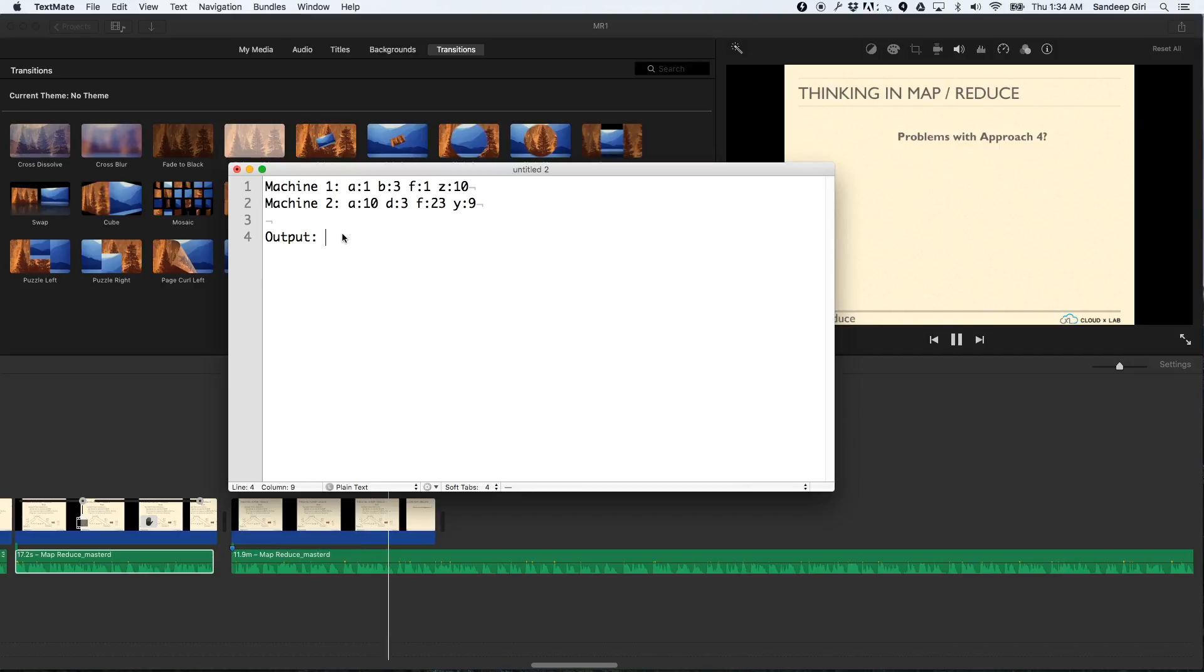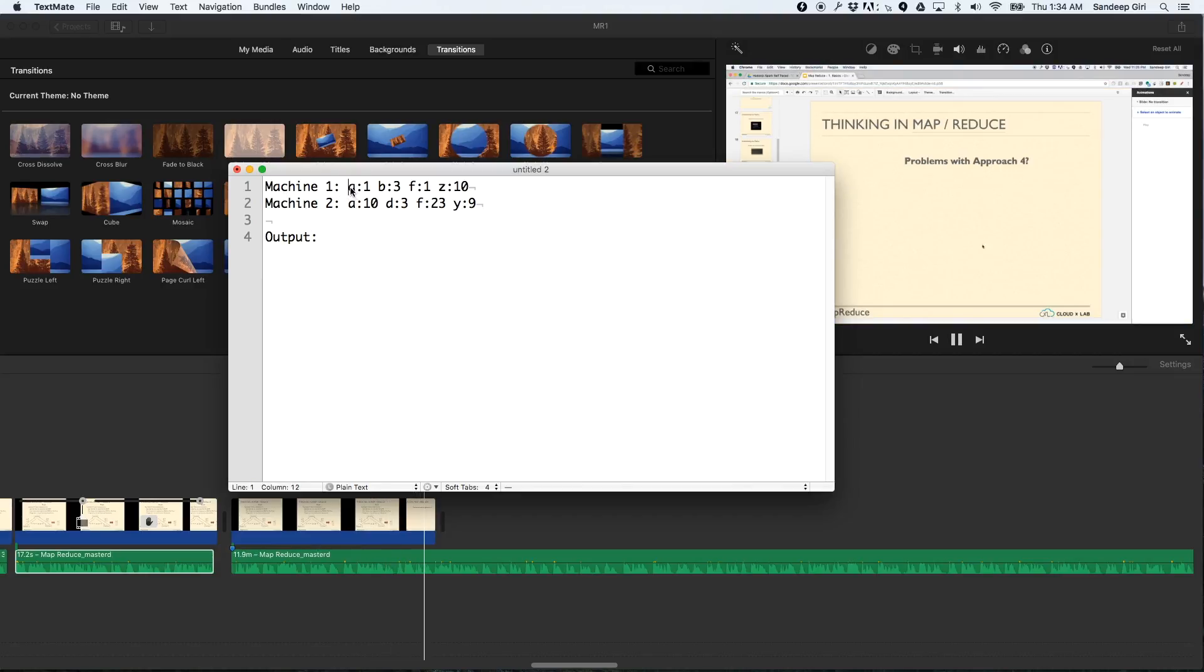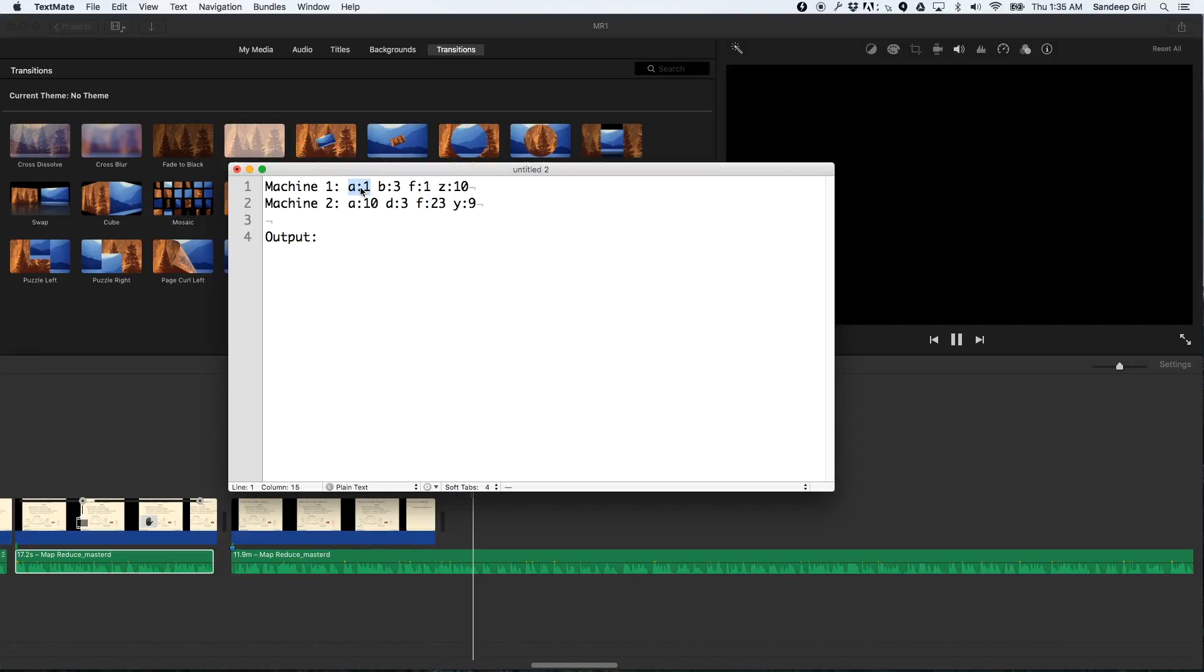Let's see how merging sorted data happens. Say machine one returns a1, where a is the key and one is the count, b3, f1, and z10. Machine two returns a10, d3, f23, and y9. To merge both results, we simply compare the first words from both. If both words are equal, we sum up the counts. Otherwise, we pick the smaller one. In one machine's output it is a1 and in another it's a10. The word in both is the same.